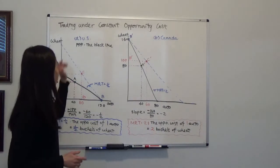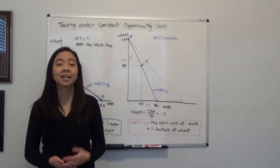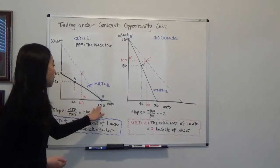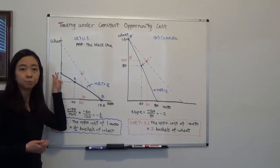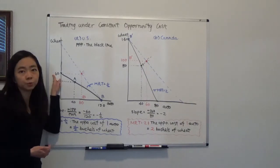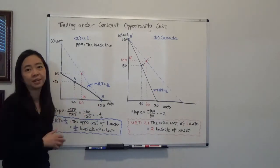So suppose US, if we use all its resources, it can produce either 120 automobiles and no wheat, or 60 bushels of wheat and no automobiles, or just any combination in between.